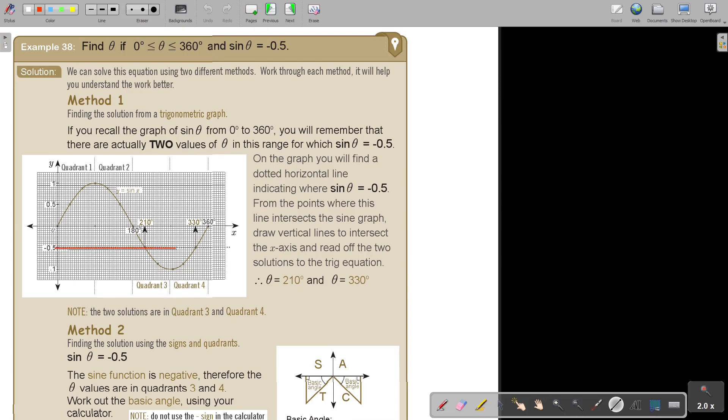If you recall the graph of sin θ from 0° to 360°, you will remember that there are actually two values of θ in this range for which sin θ is negative. Draw a line at negative 0.5, and it cuts the graph two times. Draw the arrow up and read it, and up and read it down.